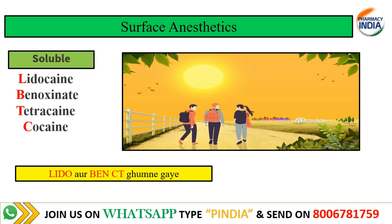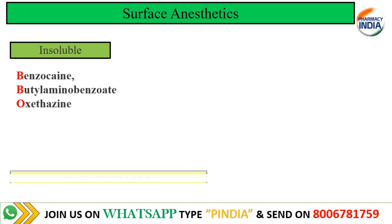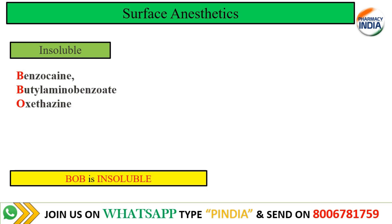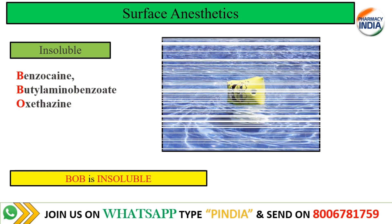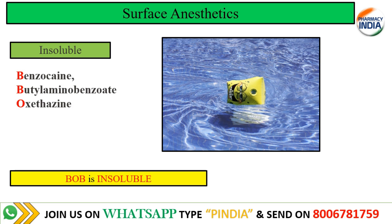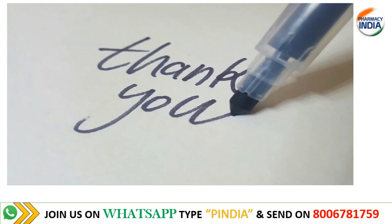Next, in surface anesthetics we have the insoluble class. The insoluble surface anesthetic drugs are benzocaine, butyl aminobenzoate, and oxethazaine. We can remember these with the mnemonic 'BOB' — B for benzocaine, O for oxethazaine, B for butyl aminobenzoate. Just like a sponge (BOB the sponge) does not dissolve in water — it is insoluble. So that was all, guys. Thank you so much. I hope this video was helpful for you.